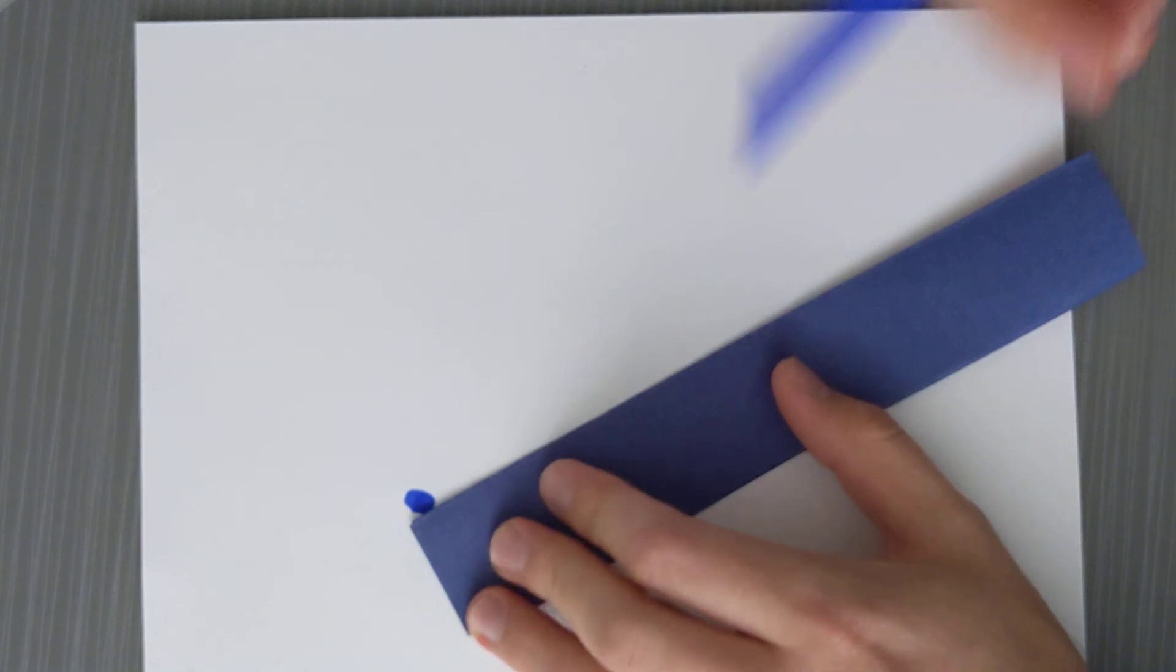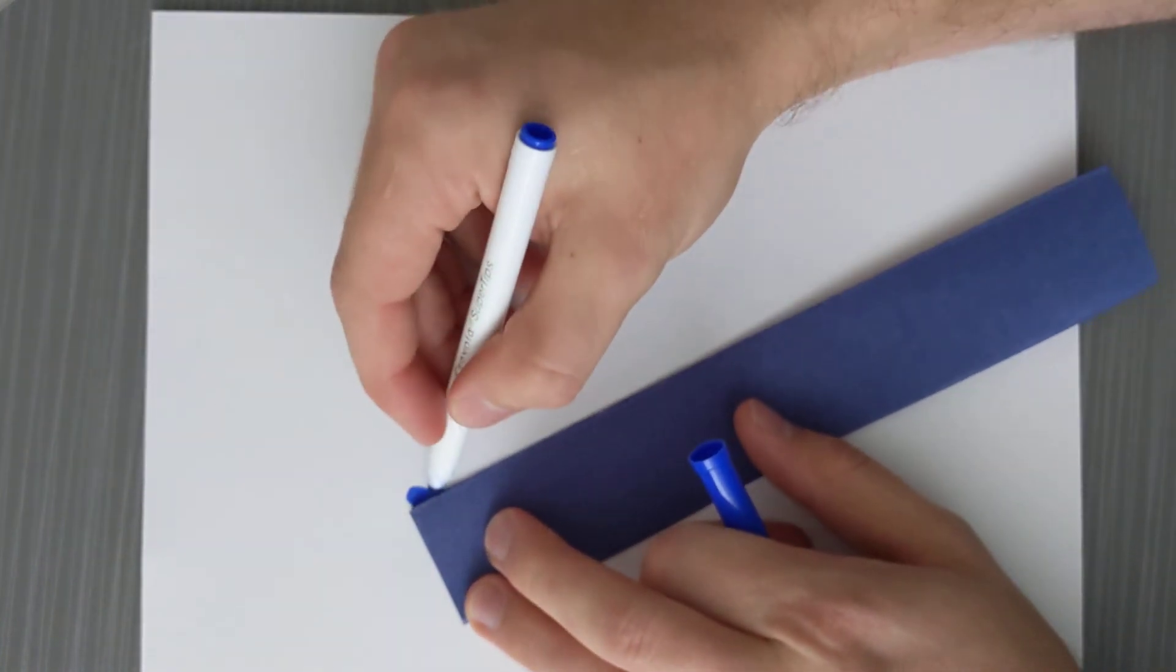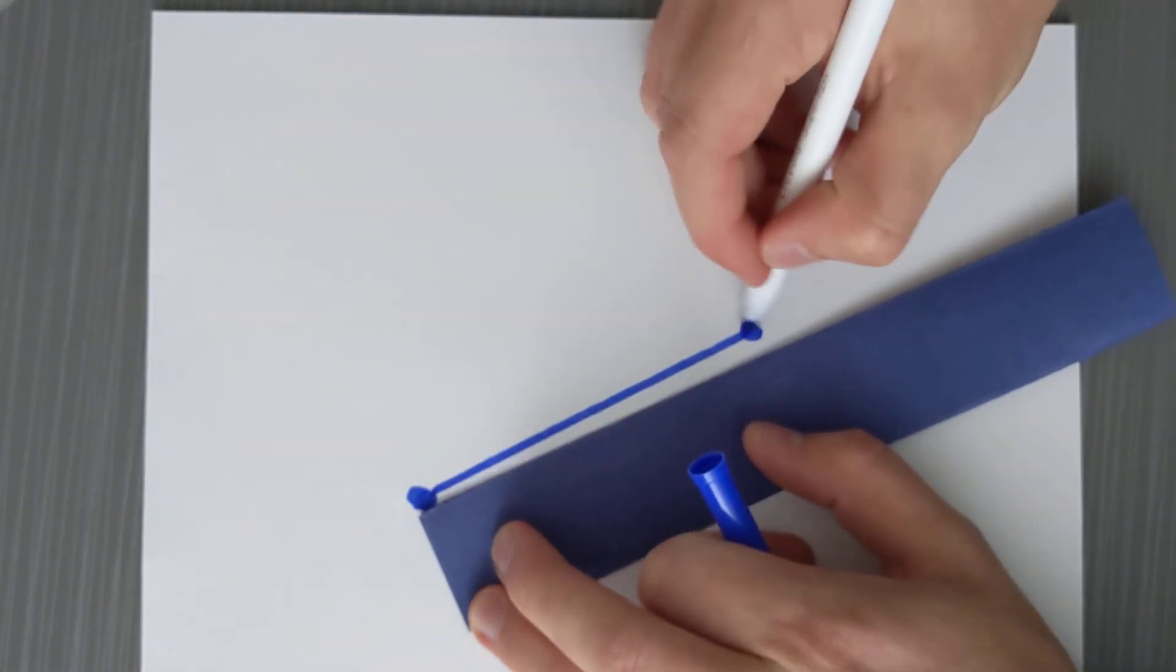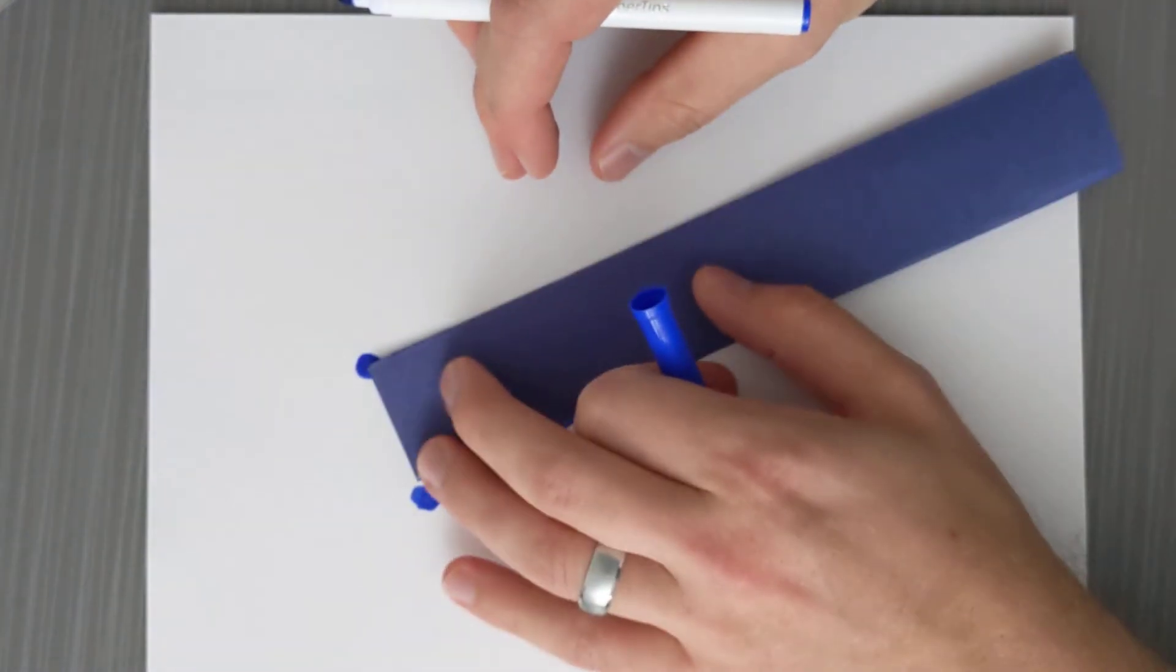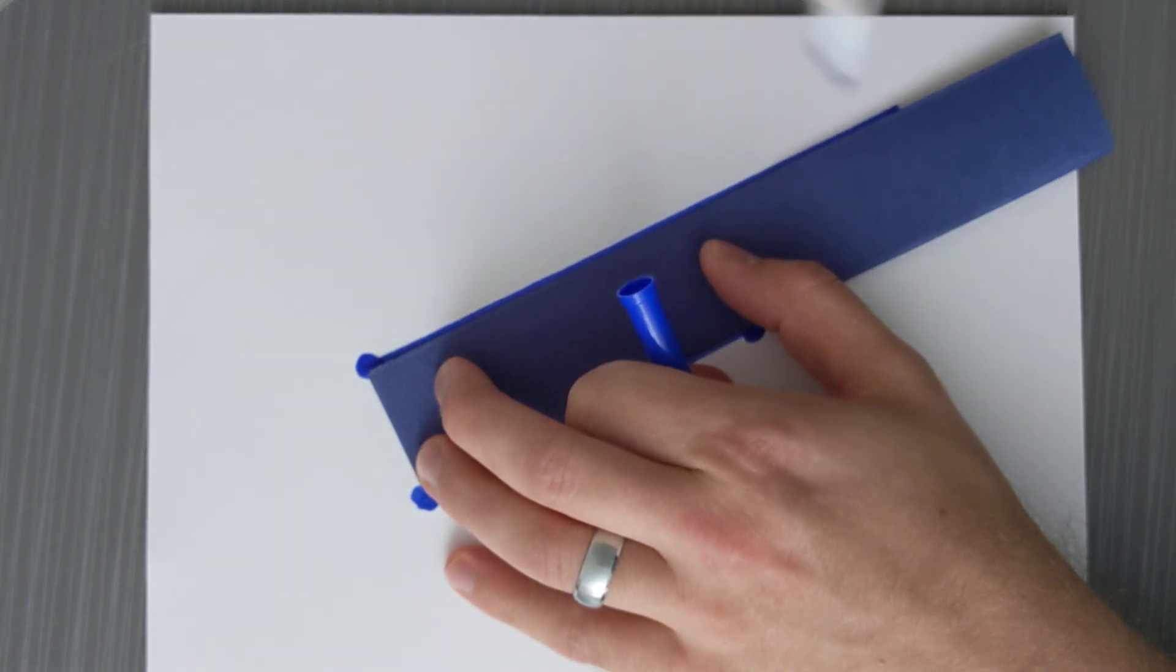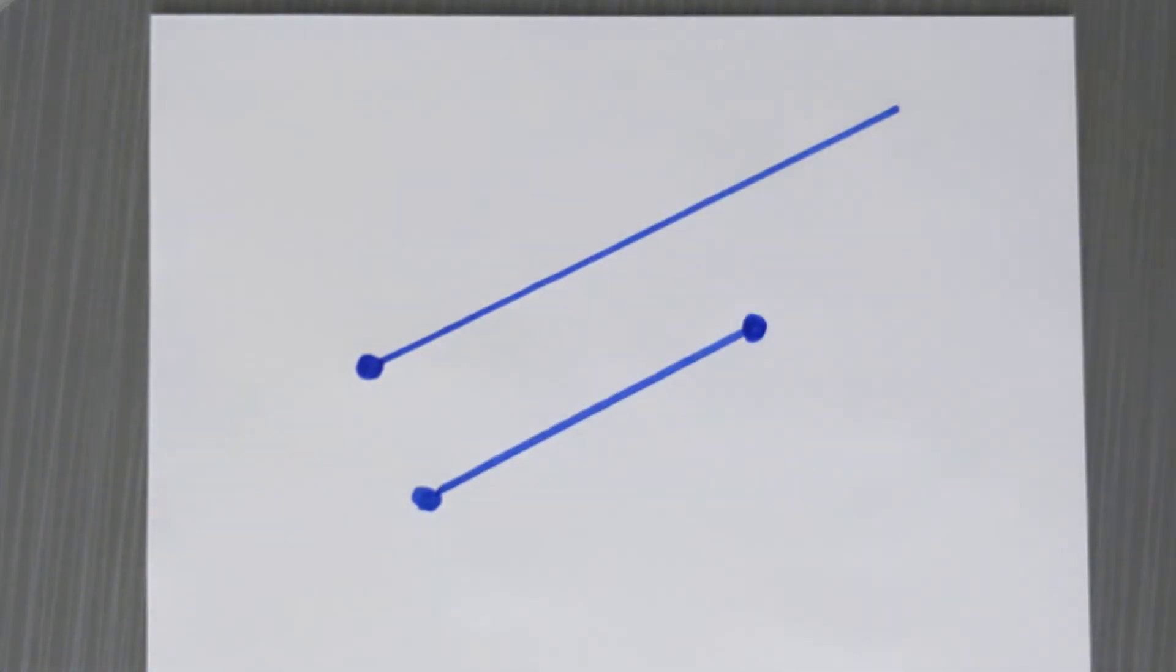So I'm going to use this as my straight edge, and this is my random segment. Now let's say I want to make a copy of that. I'll draw a line. Now it looks like the line I've drawn is a little bit too long, which is okay. In fact, whenever you draw your first line, when you're trying to make a copy, you want to make it a little bit longer.